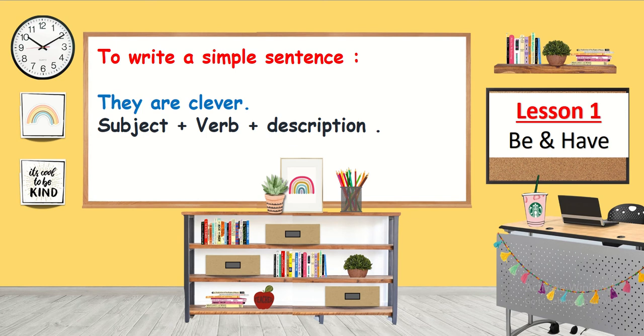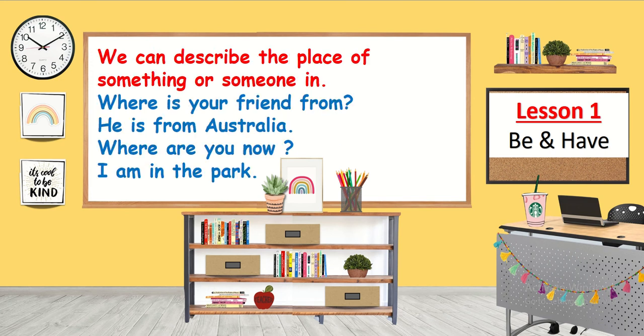We can describe the place of something or someone. Where is your friend from? He is from Australia. We can also describe where someone is now: Where are you now? I am in the park.